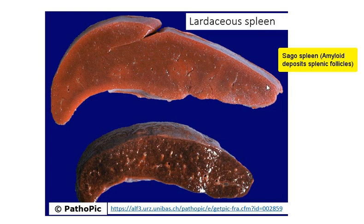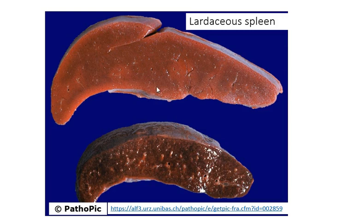On histology, the amyloid is seen more in the regions of the red pulp in lardaceous spleen. It is called lardaceous spleen because it has a kind of waxy, pale appearance when you compare this to the normal spleen — for example, in lard or in hardened fatty tissue, it can appear quite waxy.